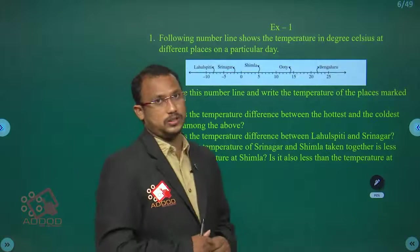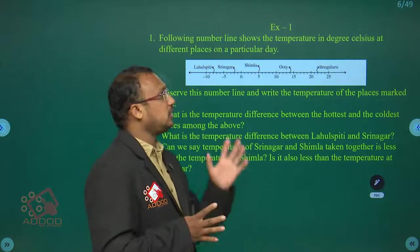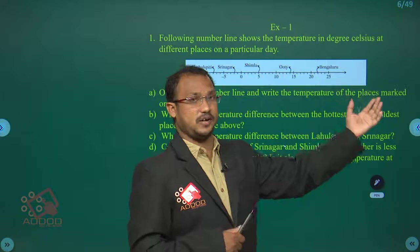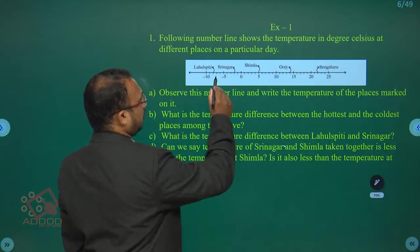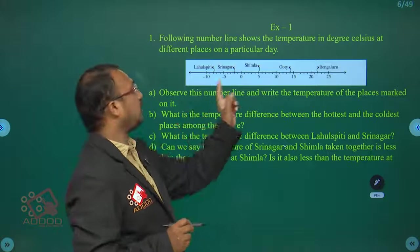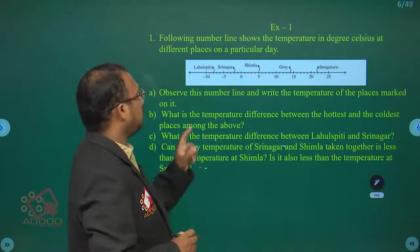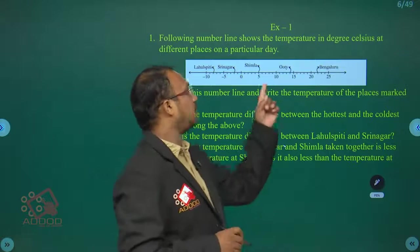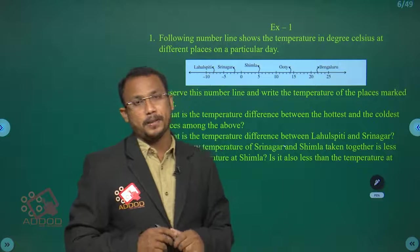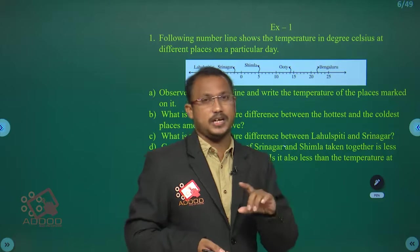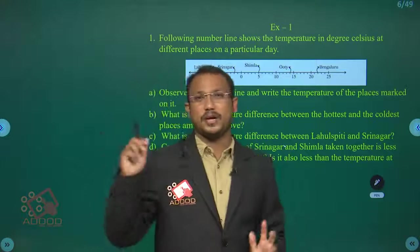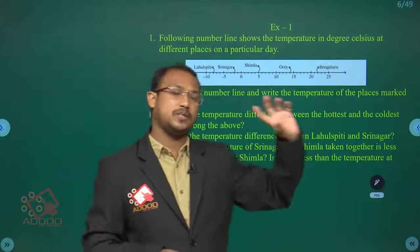Let's look at a problem. A number line shows temperatures in degrees Celsius at different places on a particular day. The temperatures are: Lahulispiti minus 8, Srinagar minus 2, Simla plus 5, Ooty plus 14, and Bangalore 22. Before zero are negative temperatures and after zero are positive temperatures.